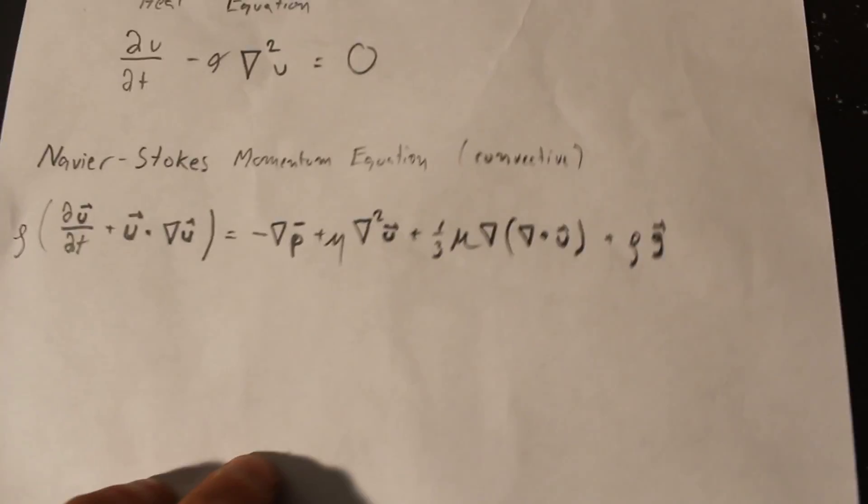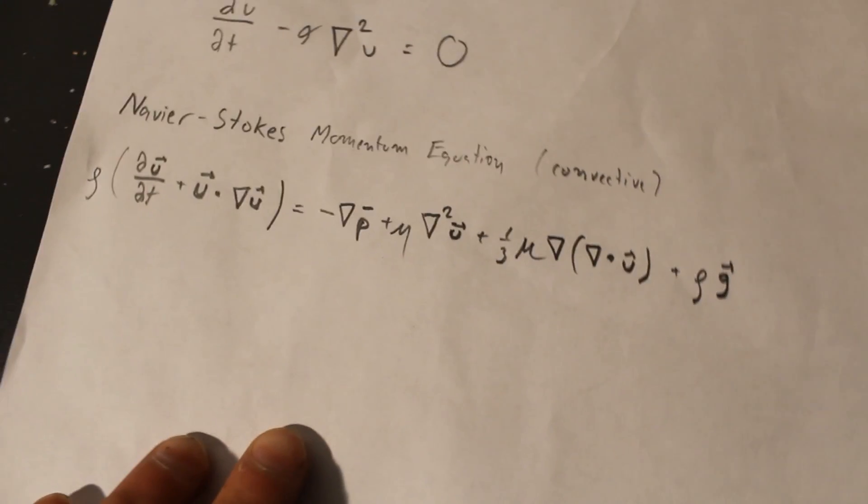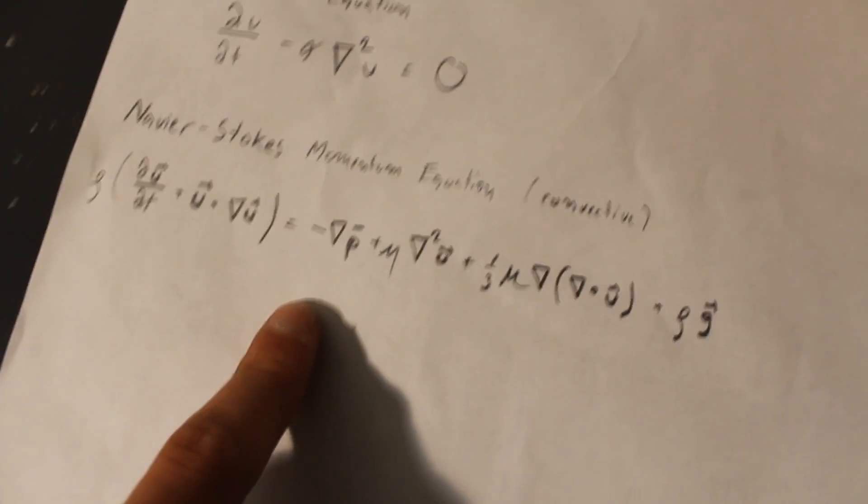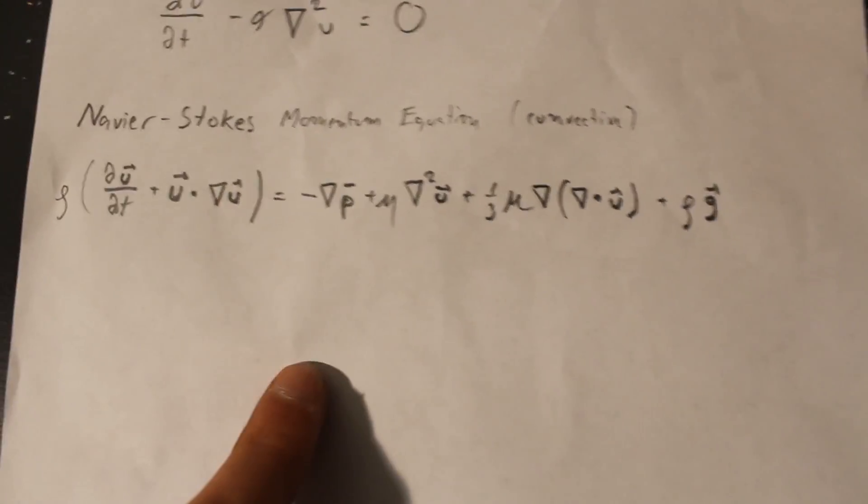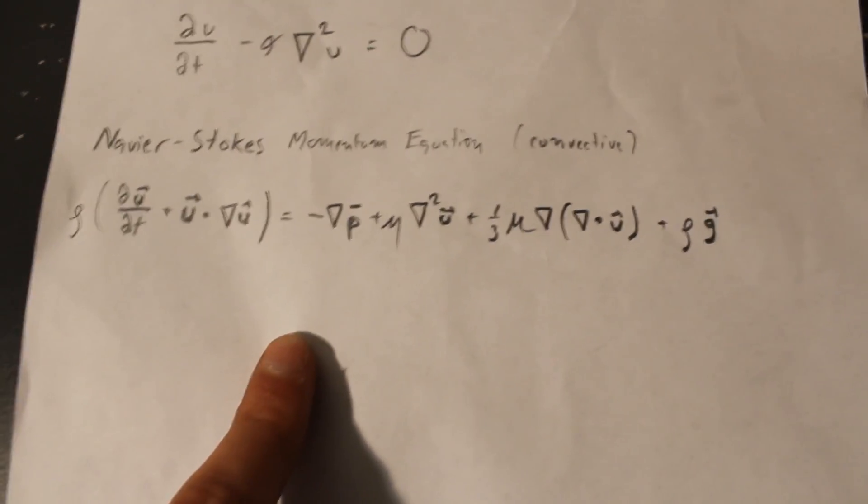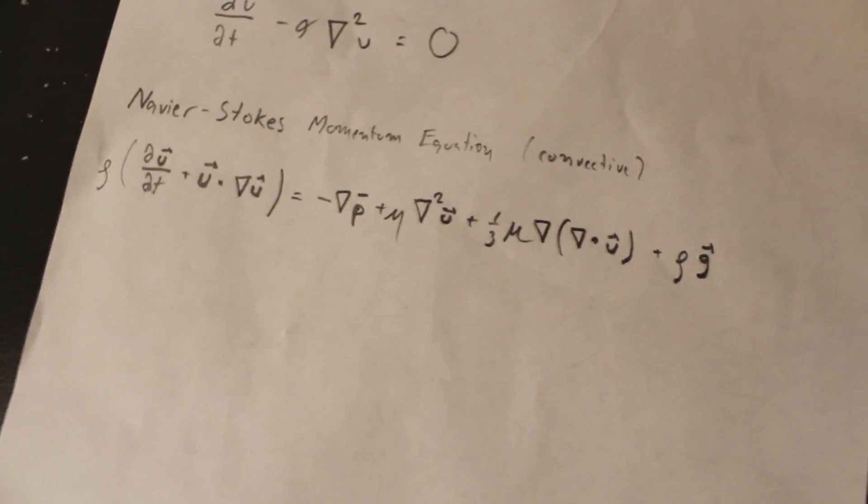As a side note, this is actually a million dollar question. It's one of the Millennium Prizes. So if you can prove or disprove that solutions to this equation always exist, and if they exist, that they're mathematically smooth, you'll actually get paid a million dollars. So get on that, subscribers.